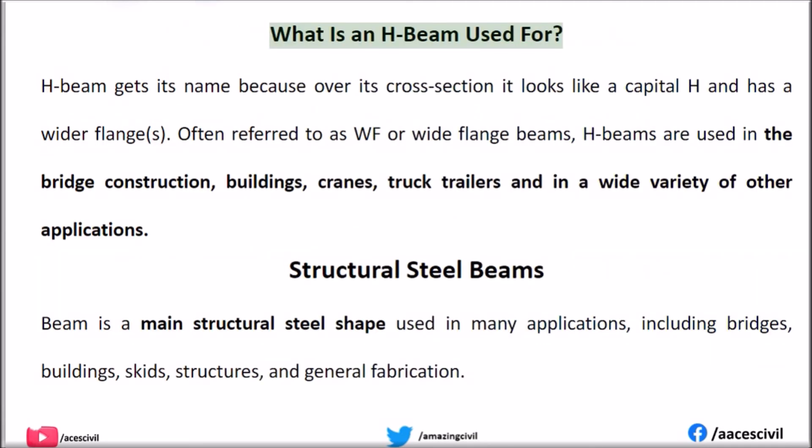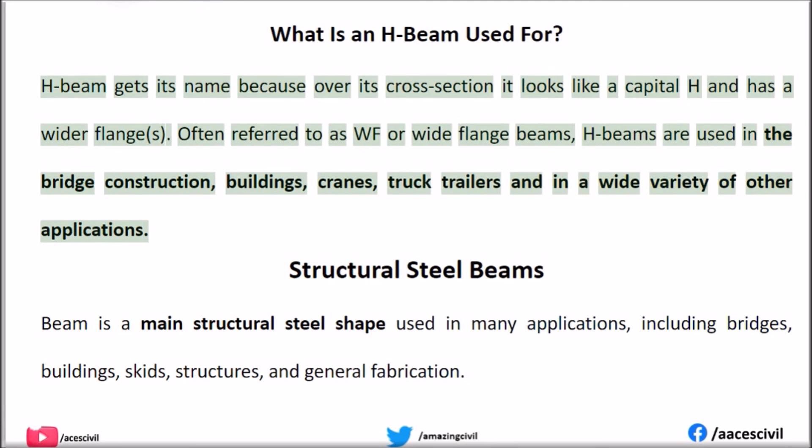What is an H-beam used for? The H-beam gets its name because over its cross-section it looks like a capital H, and has a wider flange. H-beams, often referred to as WF or wide flange beams, are used in bridge construction, buildings, cranes, truck trailers, and a wide variety of other applications.